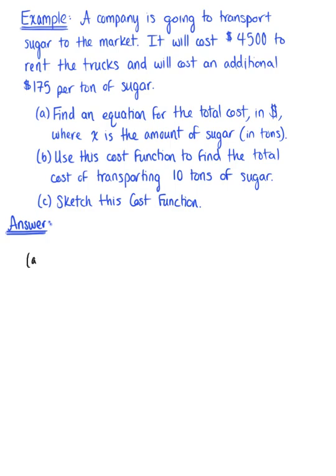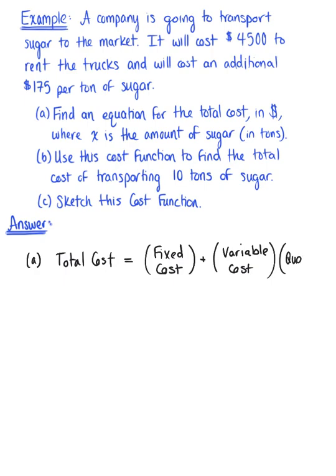So for part A, let's recall that the total cost can be broken down as follows. Total cost is going to be equal to a fixed cost, the cost that occurs regardless of how many units are being sold, plus your variable cost, the cost per unit of whatever you're selling. And this variable cost is going to be multiplied by the quantity of what you're selling.